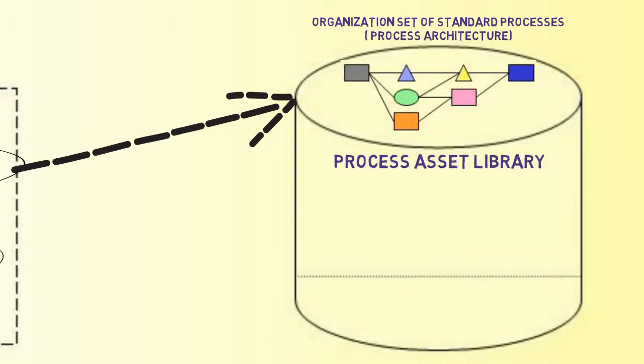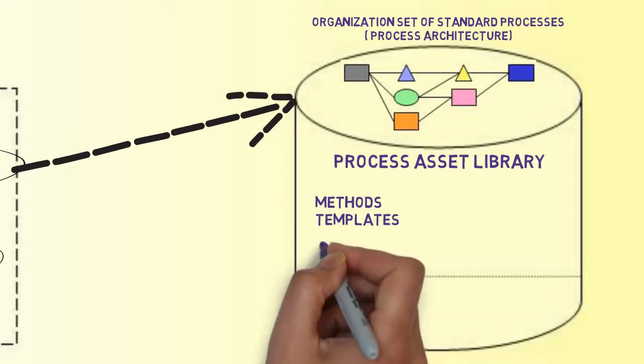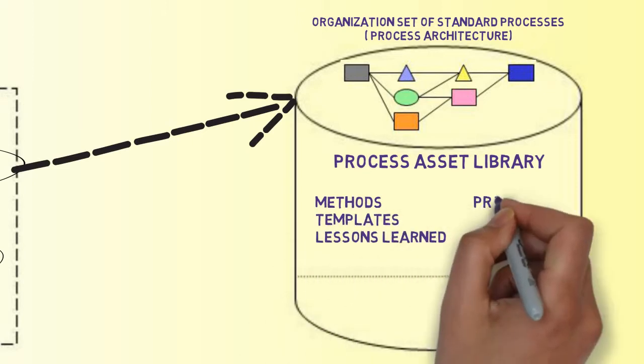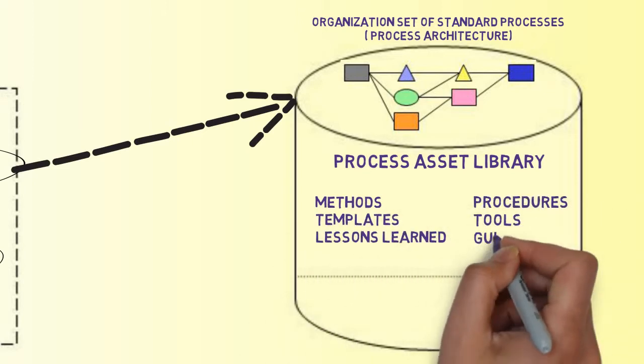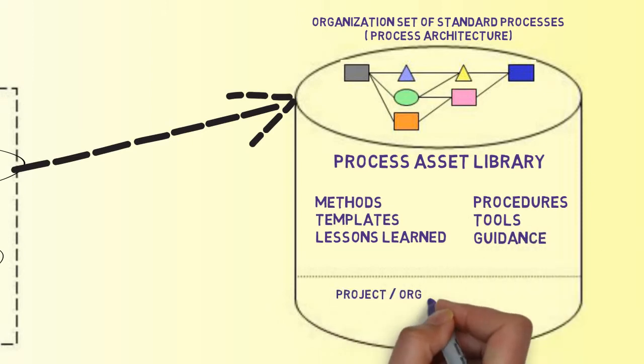Along the way, project artifacts are collected, rationalized, improved, and made available for other projects to use, and tailoring guidelines provide guidance on how to use them effectively and when.